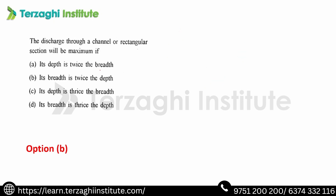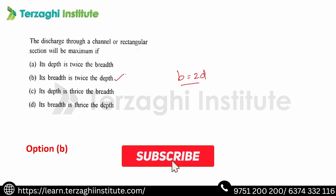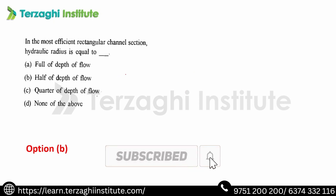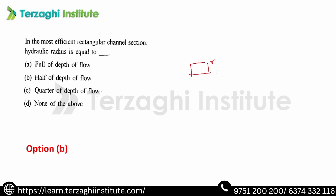The discharge through a rectangular channel section will be maximum if the depth-to-width ratio is 2/3 — that is, the width breadth is twice the depth. In the most efficient rectangular channel section, hydraulic radius equals half the depth of flow (R = y₀/2).